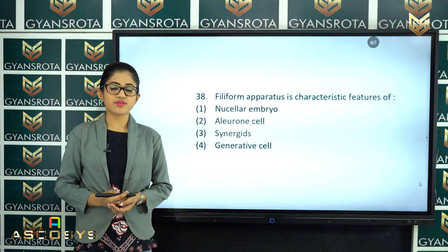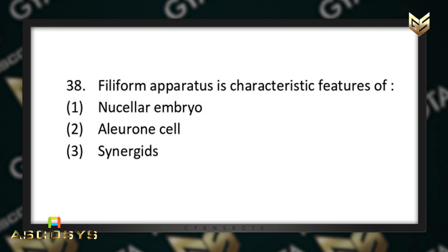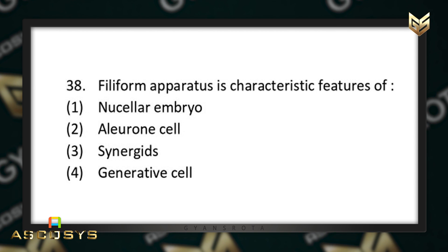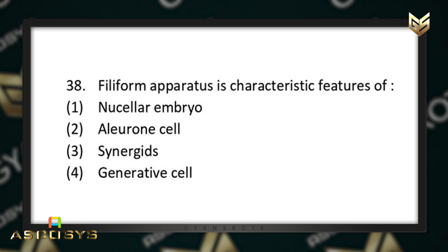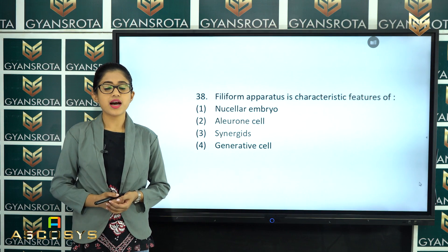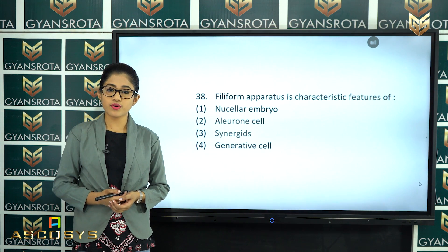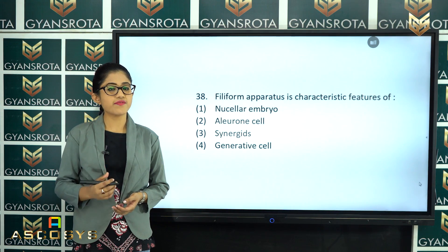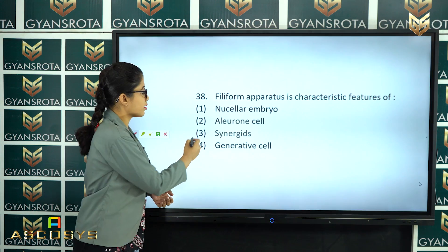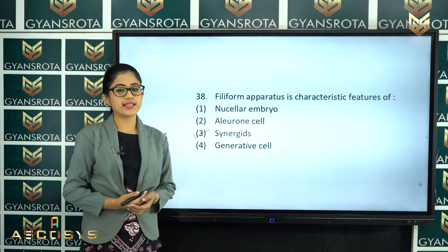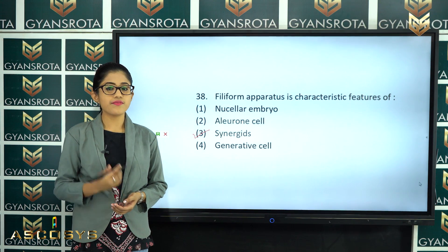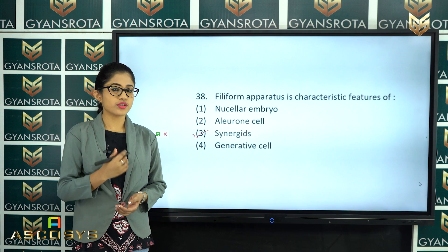The next question is question number 38. Filiform apparatus is a characteristic feature of nucellar embryo, aleurone cell, synergids, or generative cell? This is an easy, direct question from the NCERT textbook chapter Sexual Reproduction in Flowering Plants. Option number 3 is the correct answer — synergids are the characteristic feature associated with the filiform apparatus.